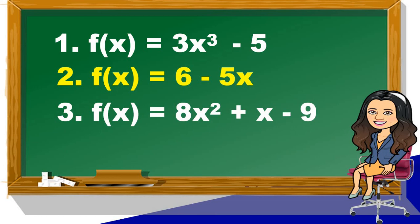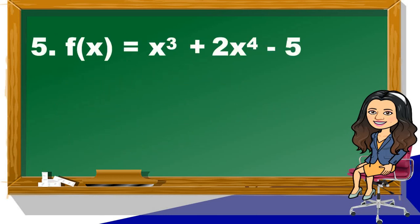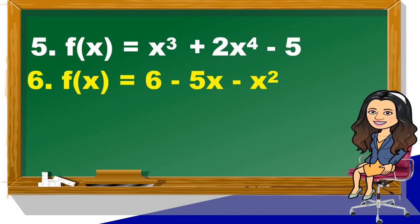Number 3: f(x) = 8x² + x - 9. Yes, this is a polynomial function and a quadratic function. Number 4: f(x) = -4. Yes, this is a polynomial function and a constant function. Number 5: f(x) = x³ + 2x⁴ - 5. Yes, this is a polynomial function and a quartic function. Number 6: f(x) = 6 - 5x - x². This is a polynomial function and a quadratic function.